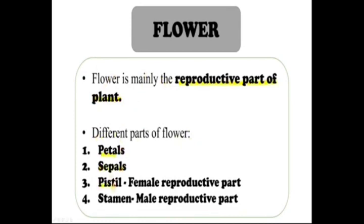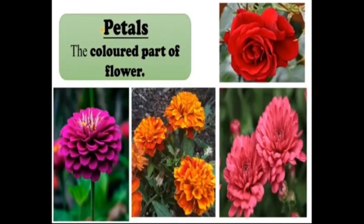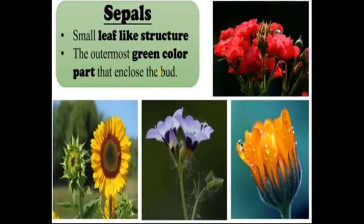Different parts of flowers: petals, pistil, and stamen. Pistil is the female reproductive part and stamen is the male reproductive part — you have to remember this point. The colored part of a flower is called petals. The red, yellowish, orange, and pink colors — all of these are the petals. These colored portions are called petals.